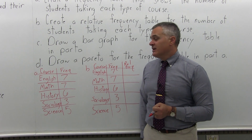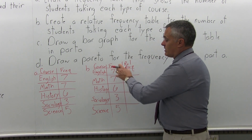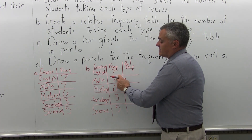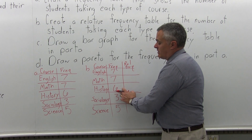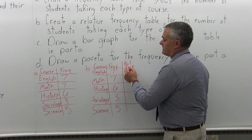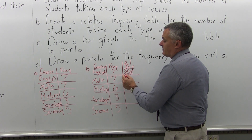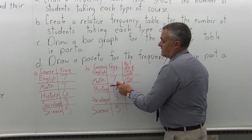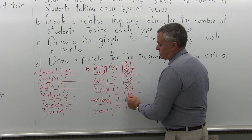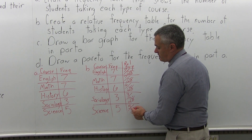Here's where it gets different from Part A — relative frequency. We need to know the total number of classes. Seven and seven is fourteen, plus six is twenty, plus three is twenty-three, plus five is twenty-eight. So for English, the relative frequency is seven over twenty-eight. For Math, seven over twenty-eight. For History, six over twenty-eight. For Sociology, the frequency over twenty-eight. And for Science, five over twenty-eight.